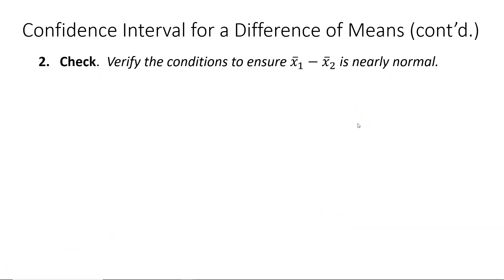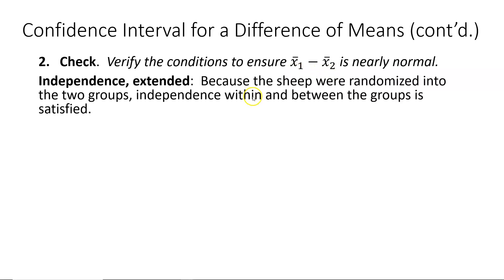Next, we move on to the check step where we're going to verify the two conditions that are needed to ensure that the sampling distribution of the difference of sample means is nearly normal. We begin with independence extended. Because the sheep were randomized into two groups, independence within and between the two groups is satisfied.